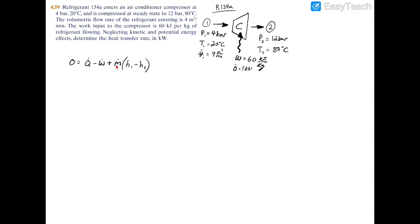So instead of having the distributive property and applying this m dot to h1 and h2, I'll just factor it out. So now if you try to fill in what's given to us, we'll have that zero equals the heat transfer, which we're obviously looking for, so we'll leave that as Q dot.